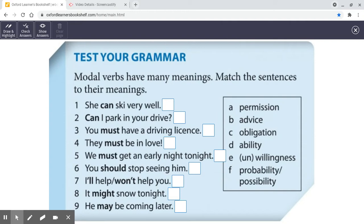saying that something is necessary. Ability, that you are able to do something. Willingness or unwillingness, you want to do it or you don't really want to do it. Probability or possibility, how likely is it? OK, so we're going to read through these ones.